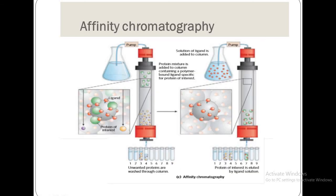Next is affinity chromatography. A ligand solution is added to the column, which contains a polymer-bound ligand specific for the protein of interest. We add the protein mixture into the column, where a ligand is bound to the polymer and attached specifically to the protein of interest.